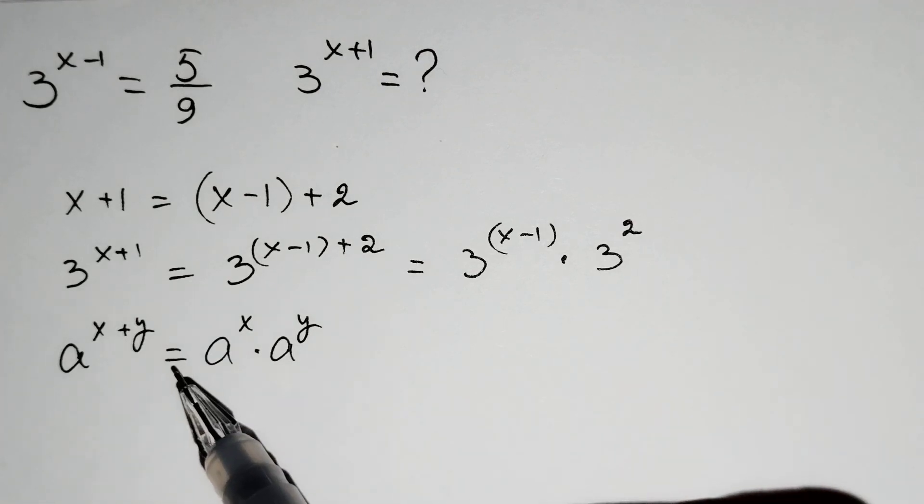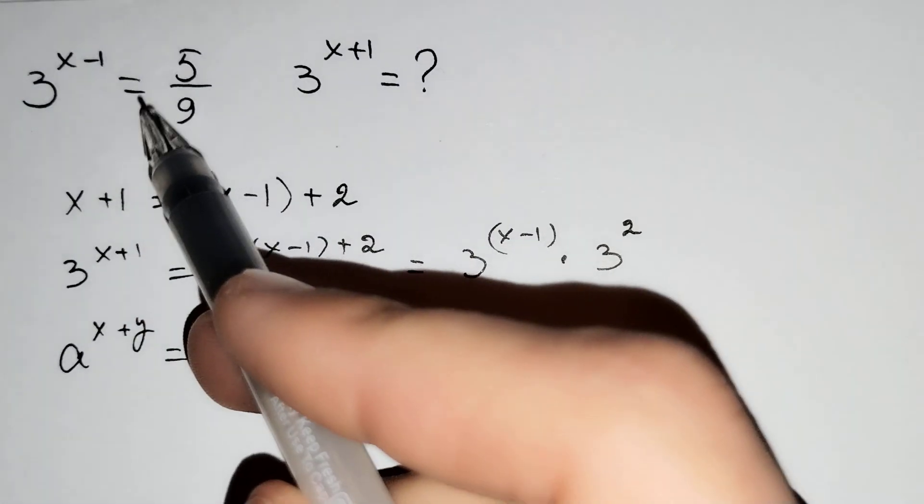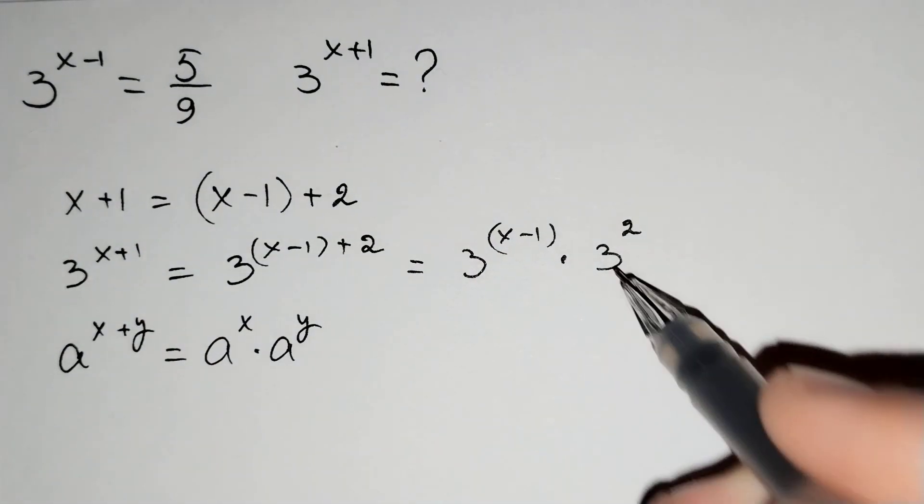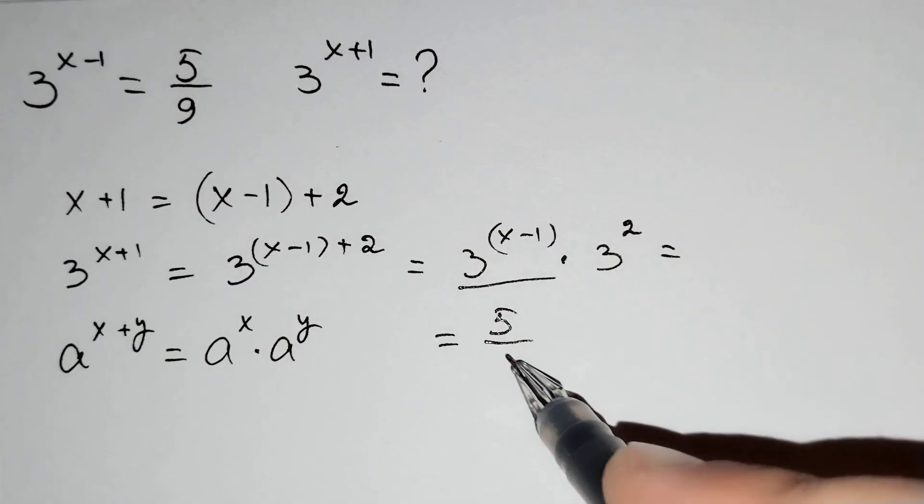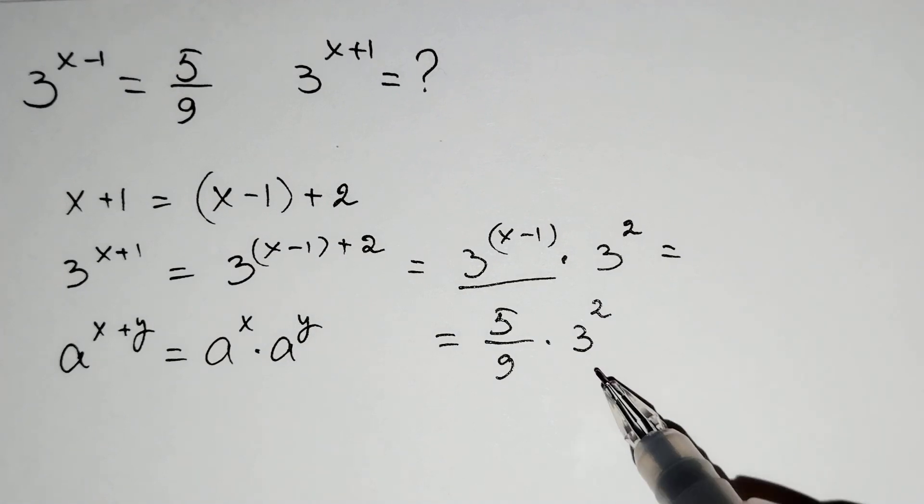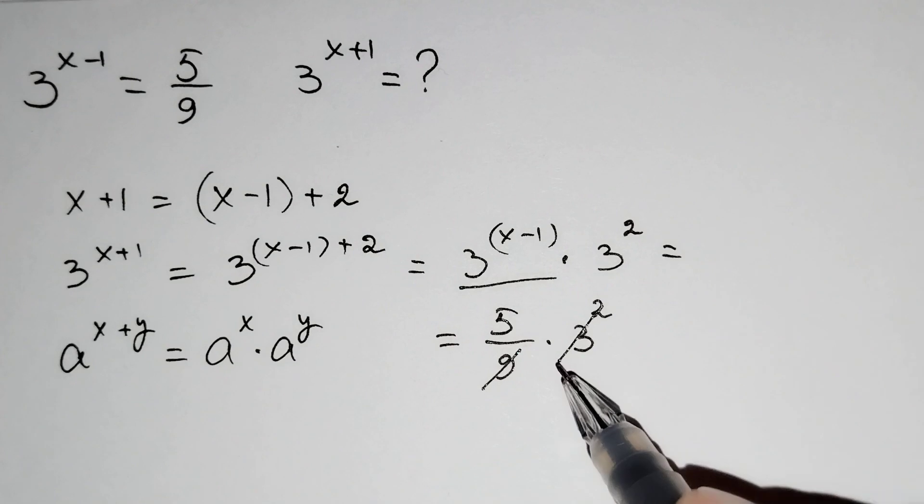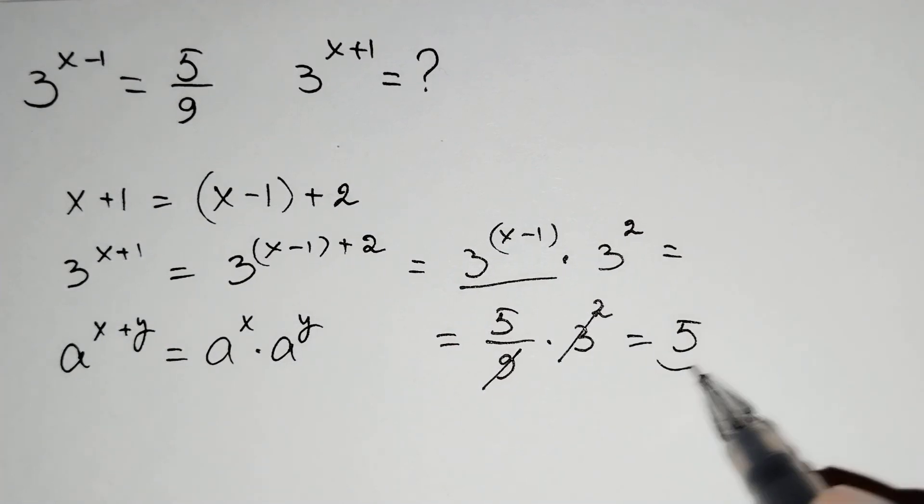We may write 3 power x minus 1 equals to 5 over 9. This is equal to 5 over 9 times 3 power 2. You know that 3 power 2 equals to 9, 9 and 9 cancel, and 5 just remains.